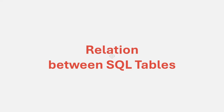In this lecture, we are going to understand what is a relation, what are the different types of relations, and how we can implement a relation between two tables. We are not going to go to the database table and define the relationship there. Instead, we are going to define the relationship between two or more tables from our entity class itself. Before we learn how we can do that, let's understand what is a relationship and why relational databases use relationships between tables.